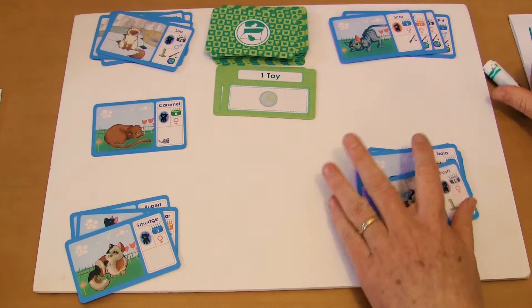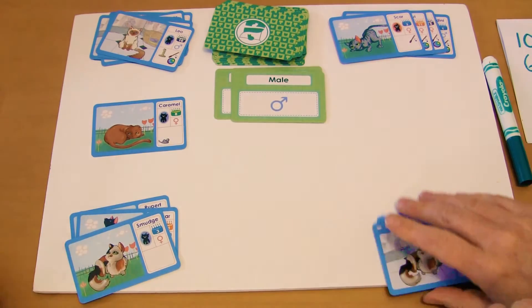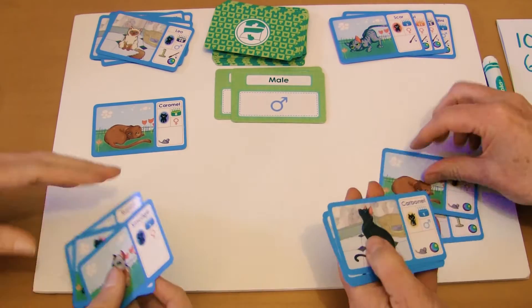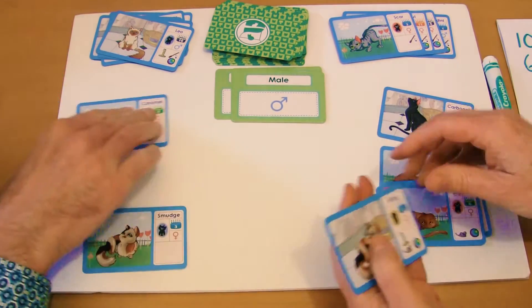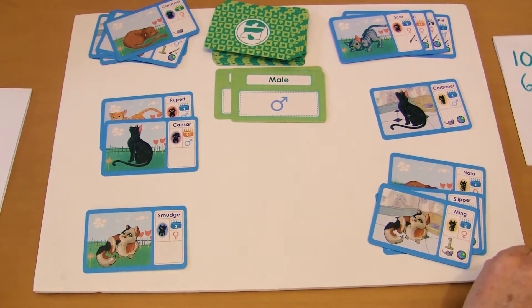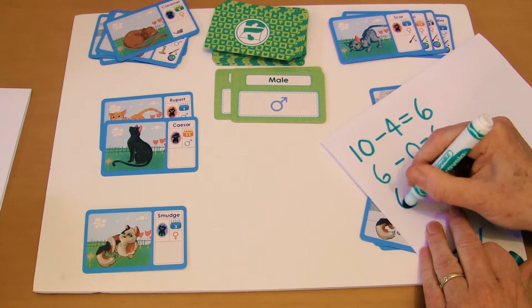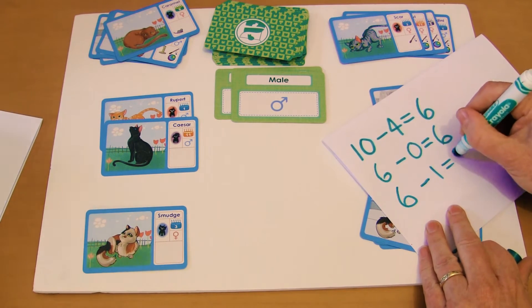This is not looking good for them. Okay, you can turn over the next one is males. Oh, there must be heaps of those. Not really. One, one male. Okay, so now I've got six minus one equals five.